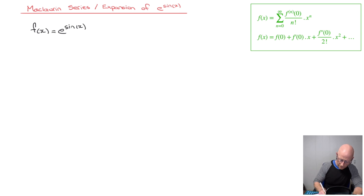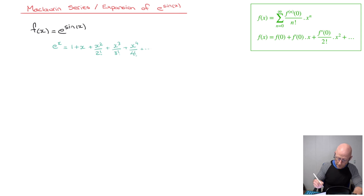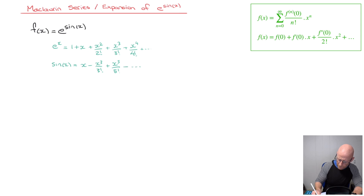And here they are. The Maclaurin series for e^x is equal to 1 + x + x²/2! + x³/3! + x⁴/4!, and we could carry on forever that way. Next, the Maclaurin series for sin x — that's equal to x - x³/3! + x⁵/5!, and we could carry on forever that way.